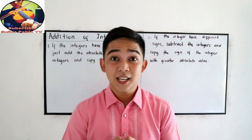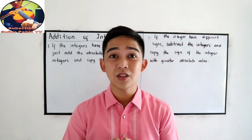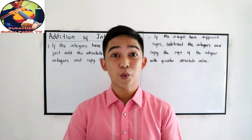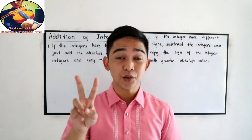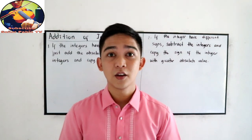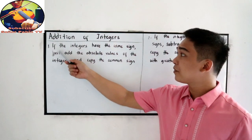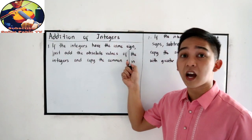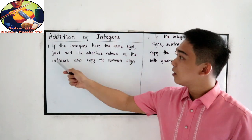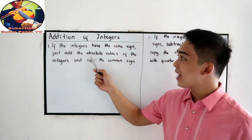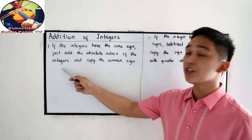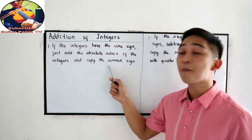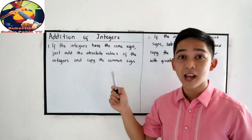Now let's proceed to addition of integers. We have two basic rules. Number one, if the integers have the same sign, just add the absolute values of the integers and copy the common sign.